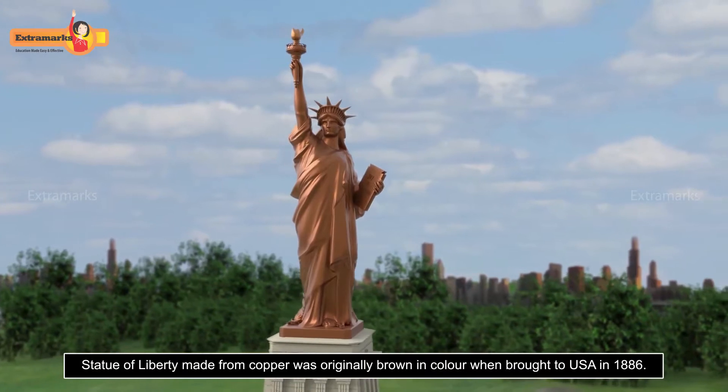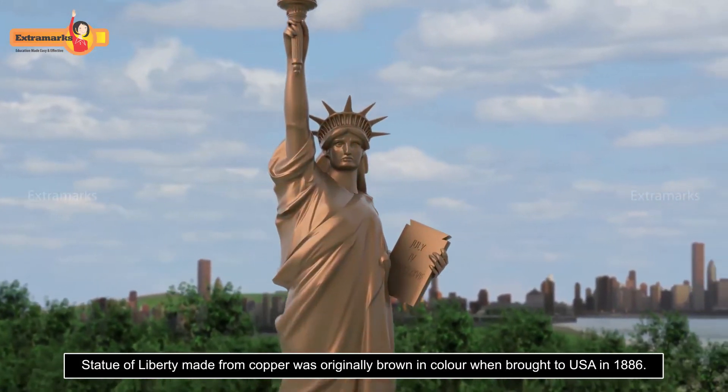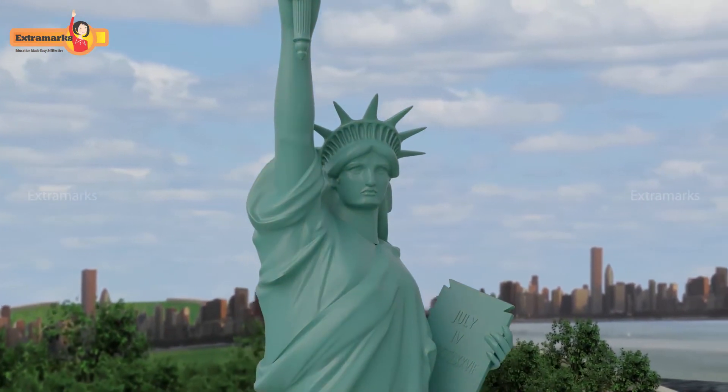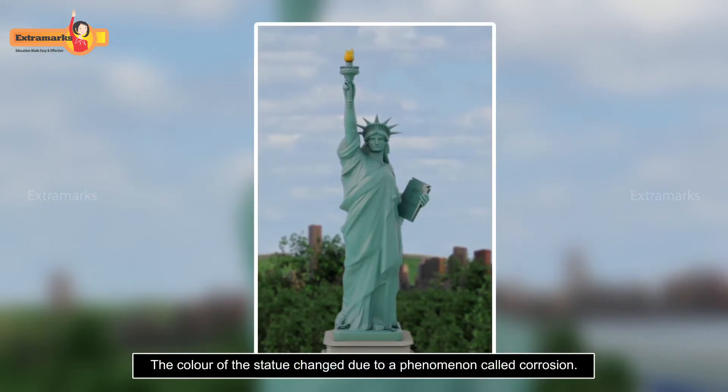The Statue of Liberty, made from copper, was originally brown in color when brought to USA in 1886. But today, it looks bluish green. How did its color change? It happened due to a phenomenon called corrosion.